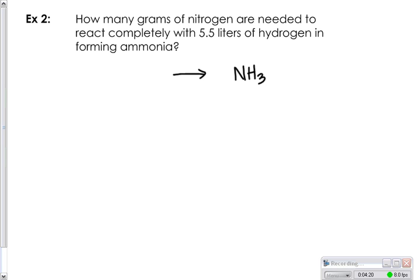We are taking hydrogen plus nitrogen to make ammonia, and we know we need a 3 here and a 2 there. This time, if we write our given information, I want to know how many grams of nitrogen from 5.5 liters of hydrogen.